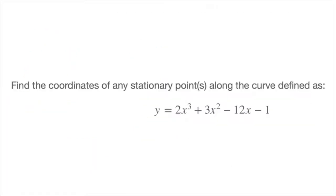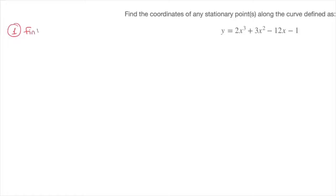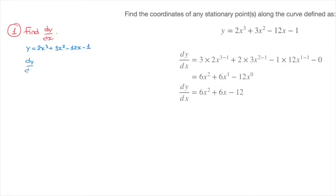Let's look at another example. We're asked to find the coordinates of any stationary points along the curve defined as y equals 2x cubed plus 3x squared minus 12x minus 1. Following the same 3-step method, step 1: we use the power rule to find the derivative, giving dy/dx equals 6x squared plus 6x minus 12.